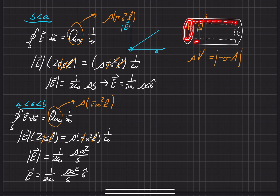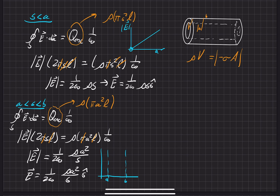Looking at the plot for this region, the only variable is s, so the electric field drops off like 1/s between a and b. So on the graph, from a to b the field drops off as a 1/s curve.